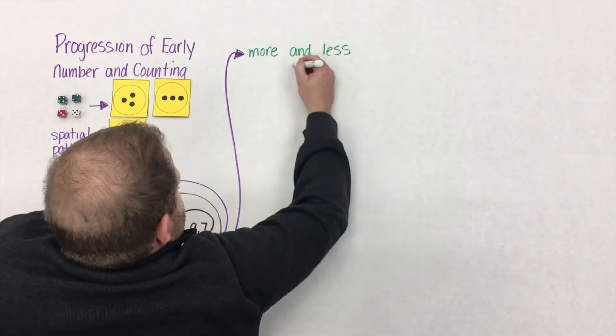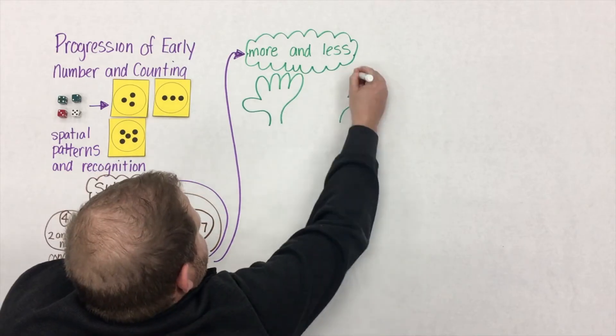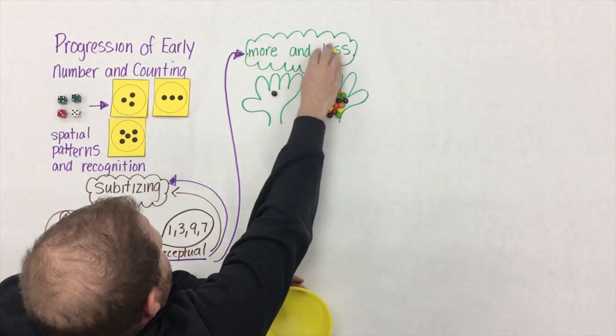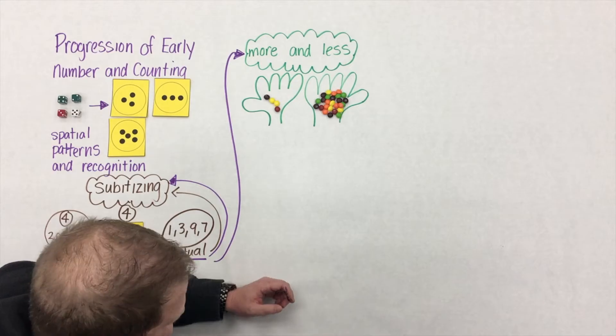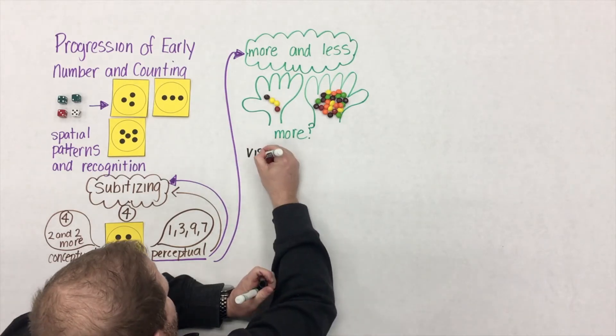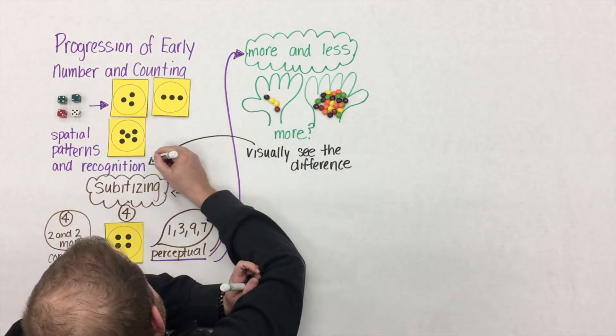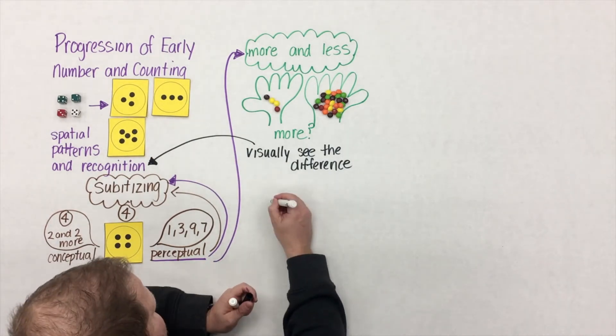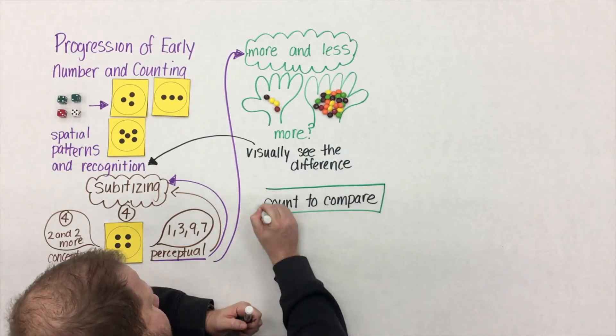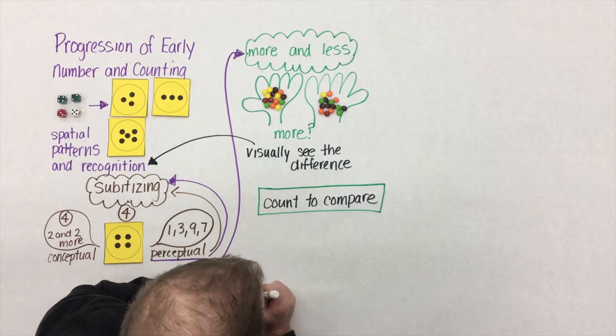As students are working on this idea of subitizing, they're simultaneously building their understanding of more and less. Let's take these two hands for example. If we were to put some candy in each hand and ask a student which one has more, I think most students are going to say the one on the right has more. They're able to recognize this because they can visually see and compare the difference. They can't tell you exactly how many more, but that visual representation of more ties back to what they're doing with subitizing. The students don't need to count to compare the quantities. If we were to take some candies from the right hand, put them in the left hand to where they're equal or almost the same, now we have a need to count.